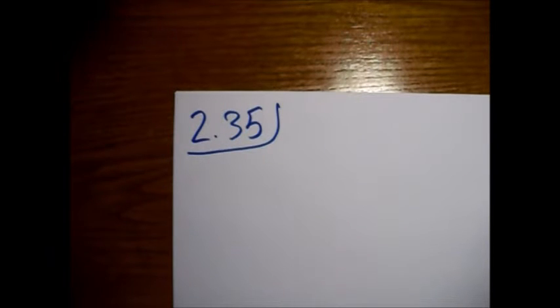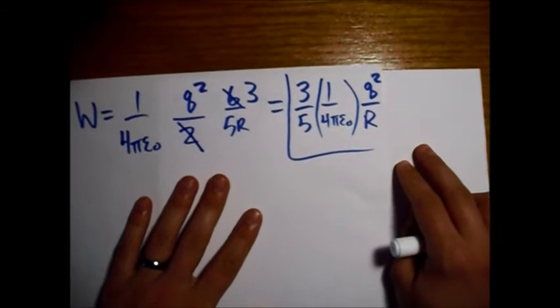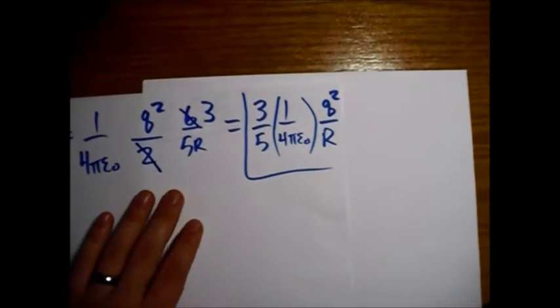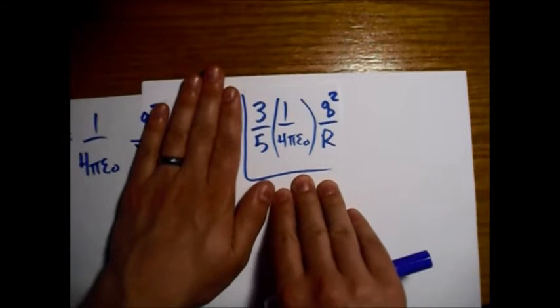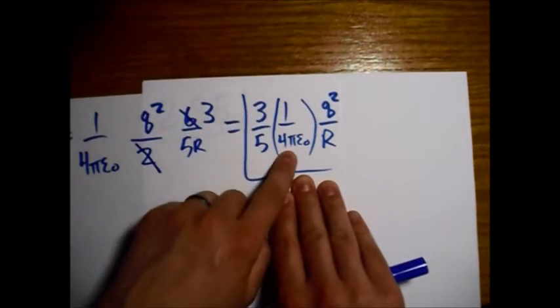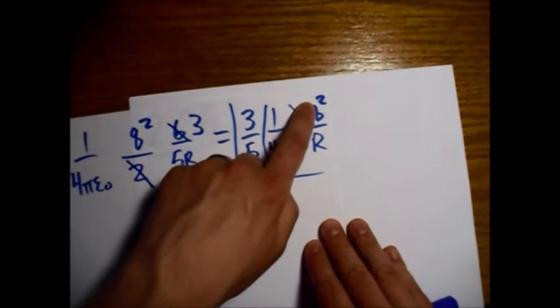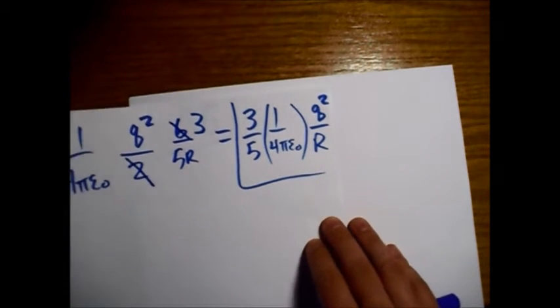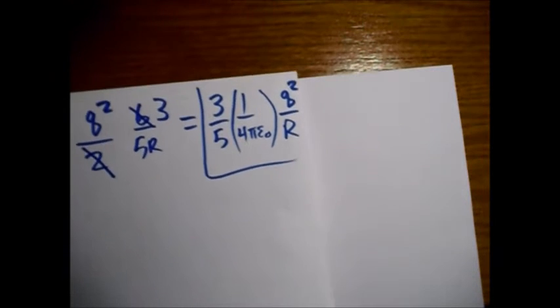Just a refresher, I saved the last page of the previous problem and basically this was the answer that we got: 3 fifths, one over four pi epsilon naught, q squared over big R. This is what we're going to show the fourth way.